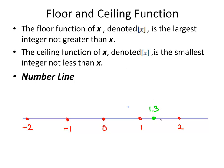Well, the floor function of 1.3 is 1—it's the integer that precedes it on the number line. The ceiling function of 1.3 is 2—the integer that comes next on the number line.